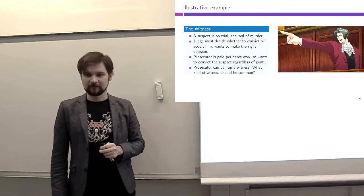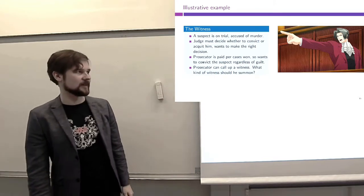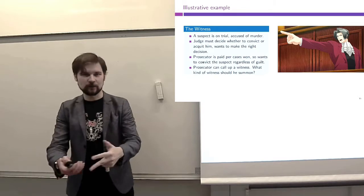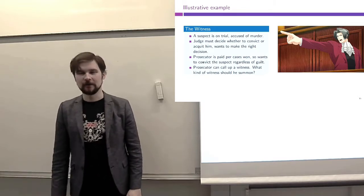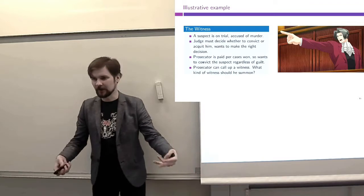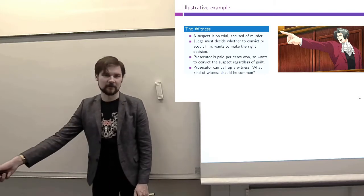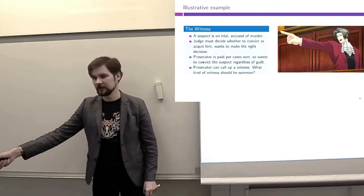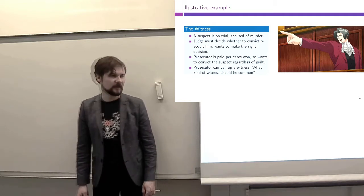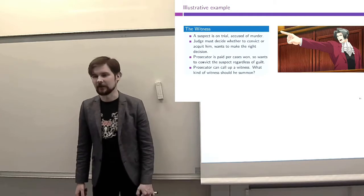Then there is the prosecutor, who is paid for convictions, so the prosecutor wants to convict the suspect regardless of guilt. The prosecutor can call up a witness, and this witness will tell something about the suspect. You can think of a witness being in a certain place on the night of the murder — where they are determines what kind of information they can provide about the suspect's guilt.